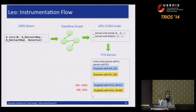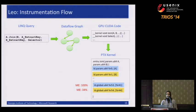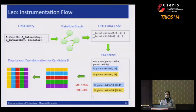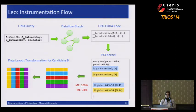When we instrument and execute, we might find that A has 100% memory efficiency and doesn't need any changes. But we perform the data layout transformation on candidate B because it had lower memory efficiency. That's how the instrumentation flow works.